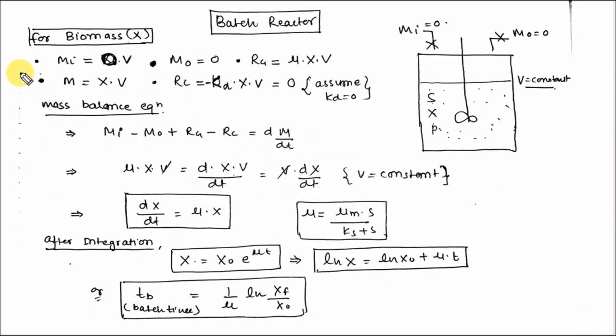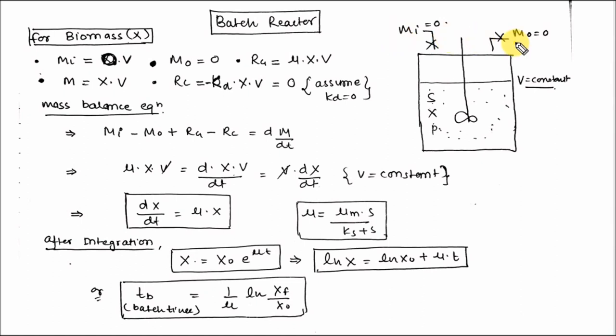Let's discuss the biomass formation in a batch reactor. Remember the 5 steps for calculating material balance in a batch reactor or any reactor process. In a batch reactor there is no input and no output in the process operations — that means Mi is 0 and Mo is 0.